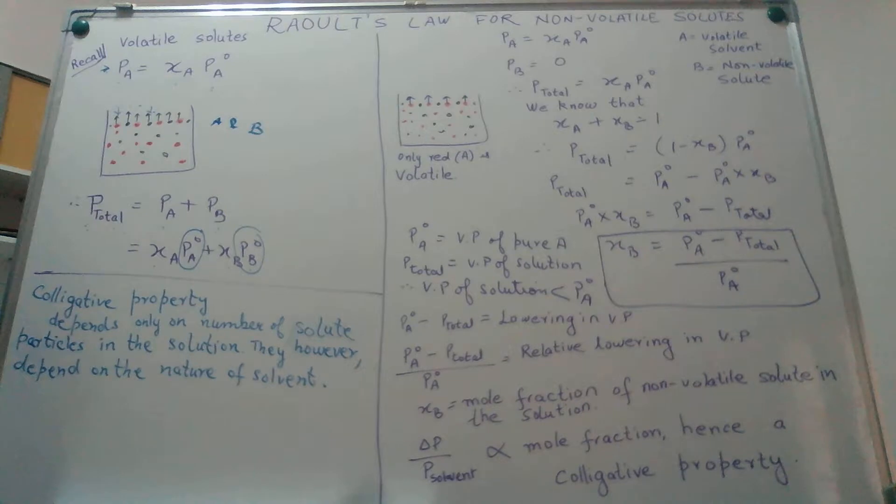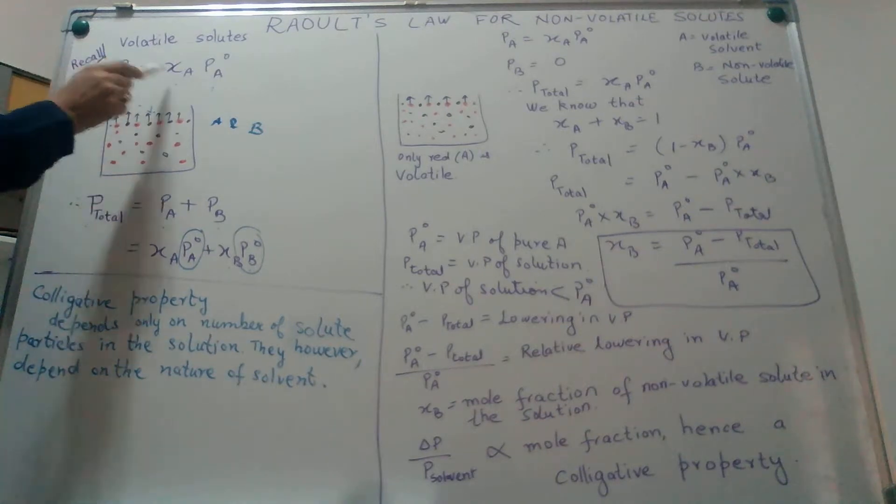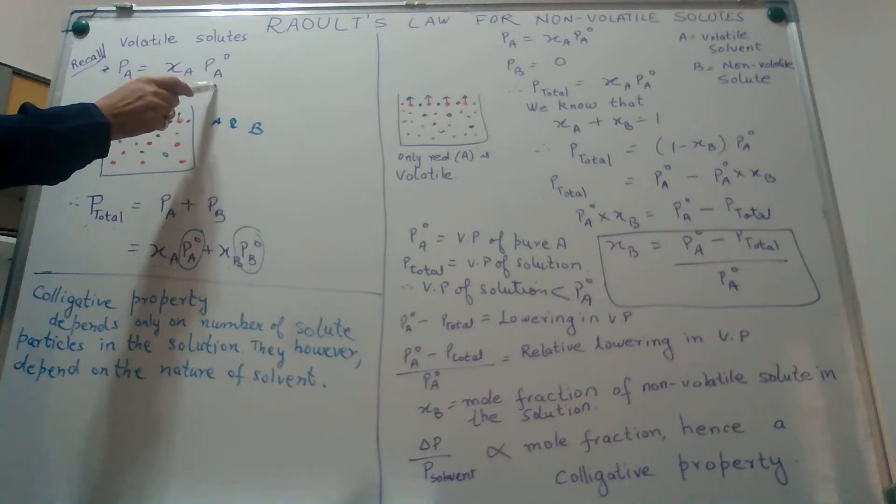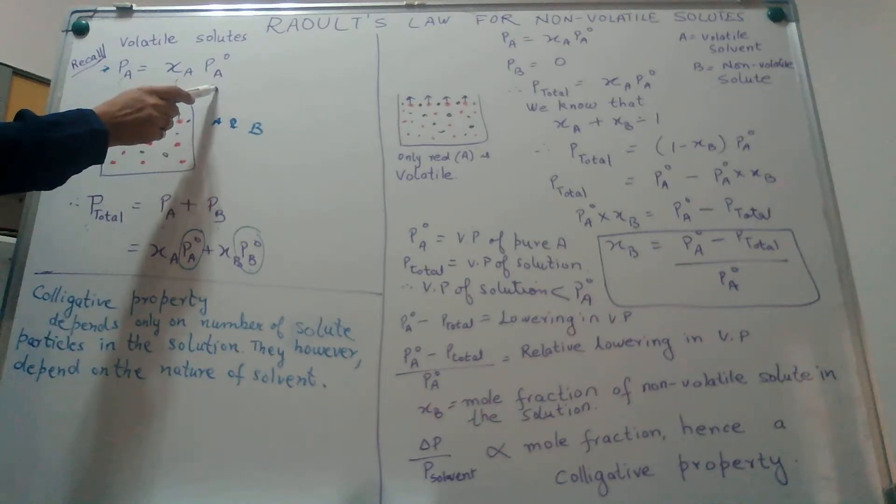For immediate recall, we first go back to Raoult's law initially, which says that when you have a mixture of two volatile components, the vapor pressure of each component equals its mole fraction in the solution multiplied by the vapor pressure of the component in the pure state. So we have Pa is xA into Pa0.